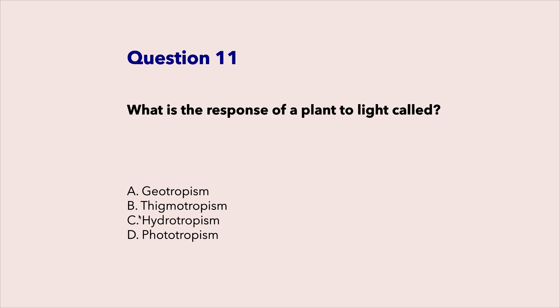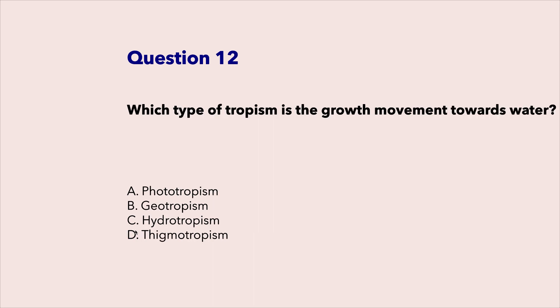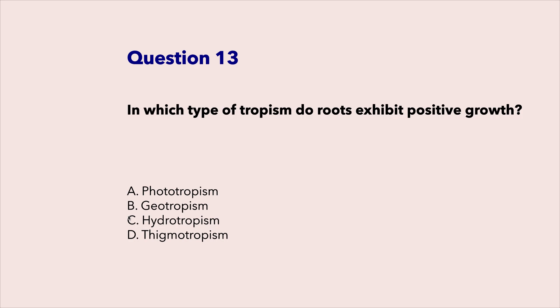What is the response of a plant to light called? Phototropism. Which type of tropism is the growth movement towards water? Hydrotropism. In which type of tropism do roots exhibit positive growth? Geotropism.